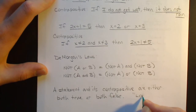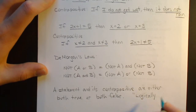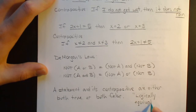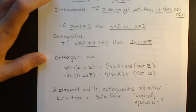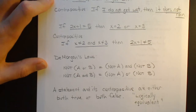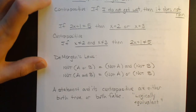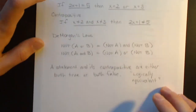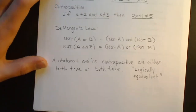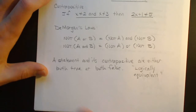It's called logically equivalent. It's the logic form of equals — either both true or both false. And what that means is that the contrapositive is a handy stand-in for the original statement.